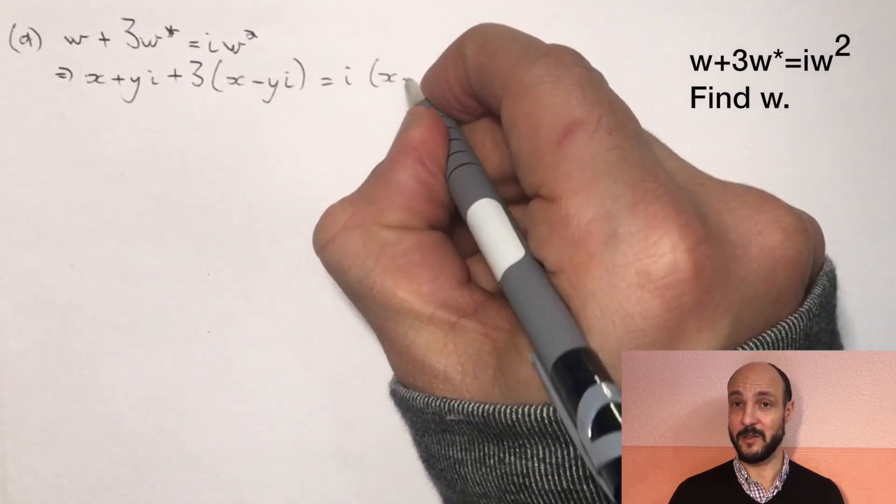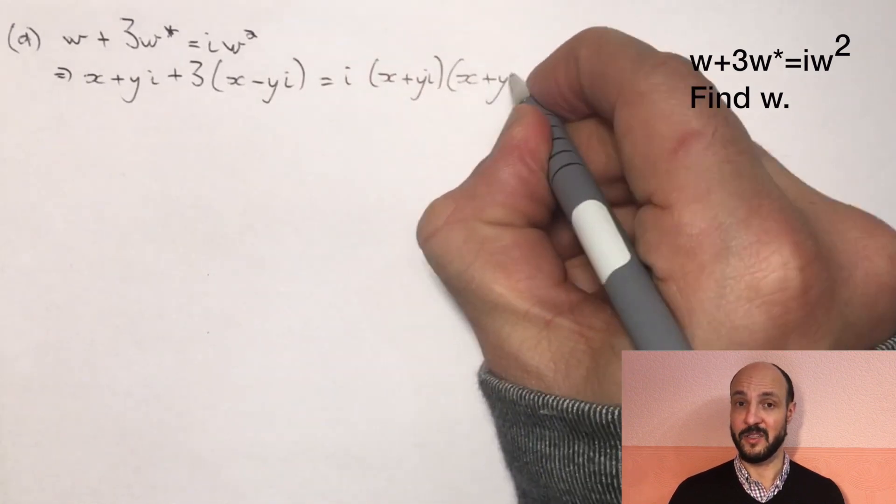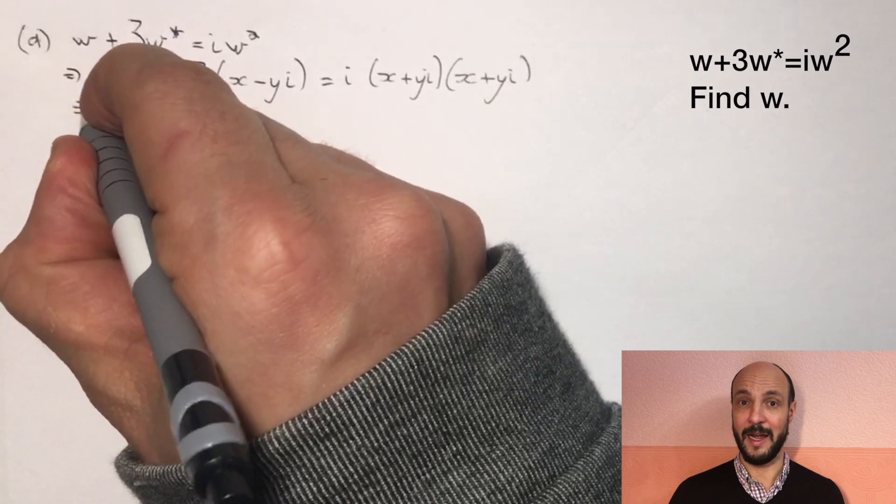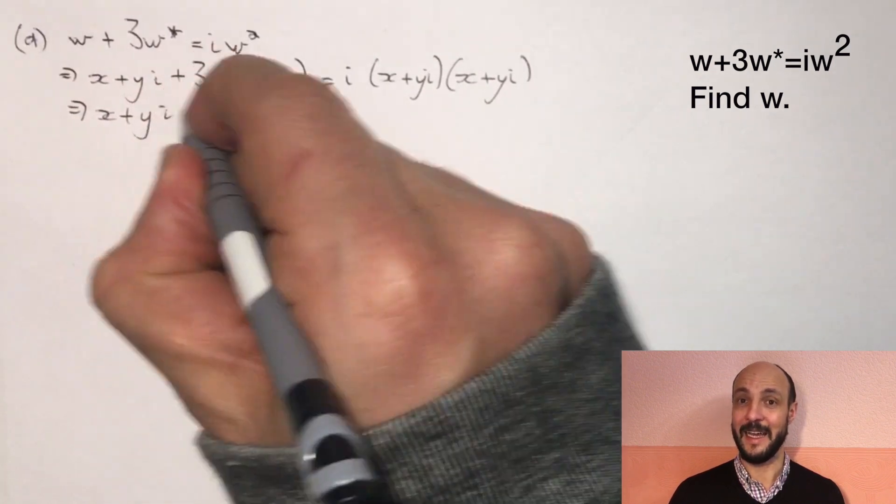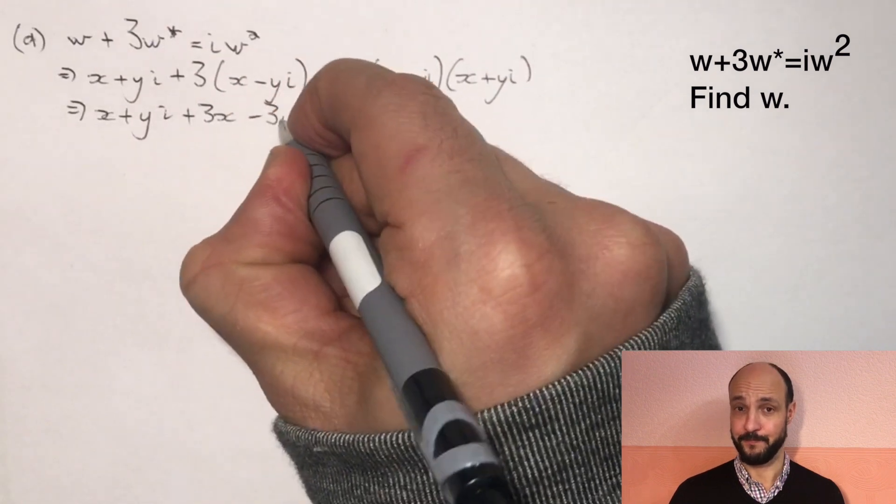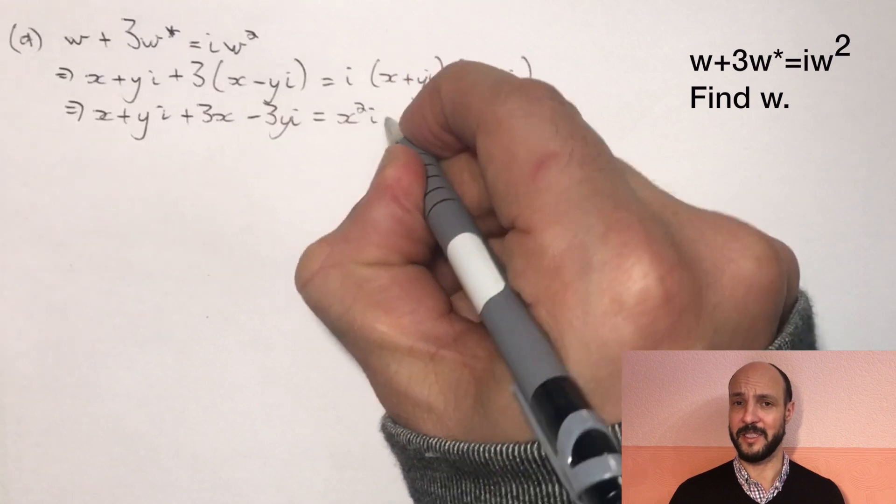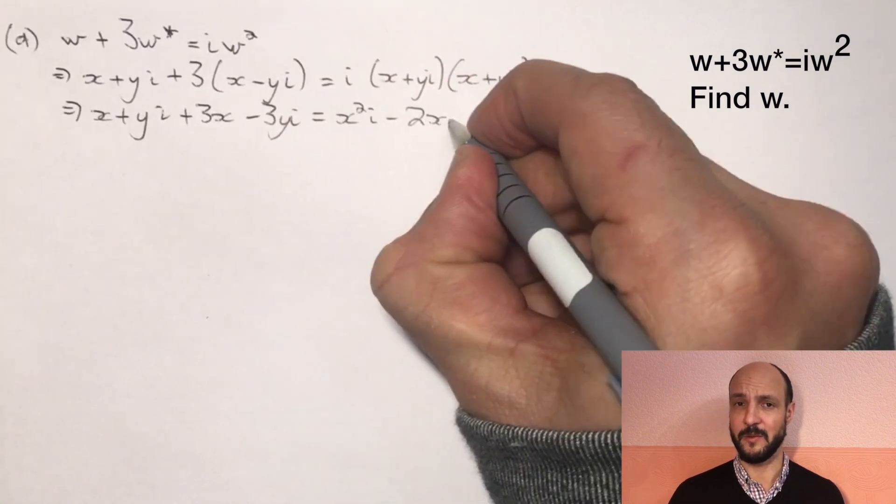And then if we expand all our brackets we have X plus Yi plus 3X minus 3Yi equals X²i minus 2XY minus Y²i. And then all we're going to do is gather together our real terms and our imaginary terms on either side of the equal sign.